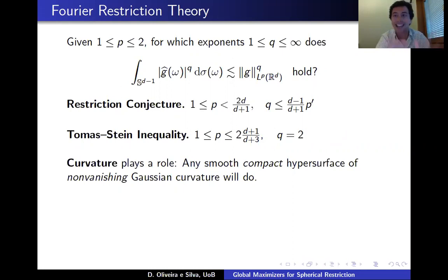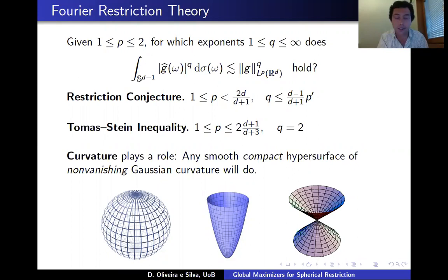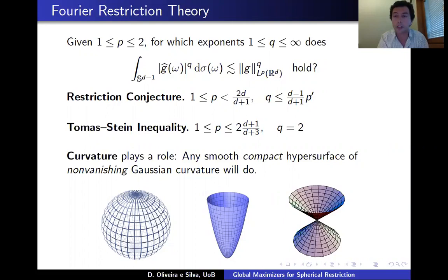The setting is somewhat artificial in that I chose the unit sphere, but one could equally consider an arbitrary smooth compact hypersurface of non-vanishing Gaussian curvature, or even relax these conditions. For instance, the paraboloid and the cone are scaling invariant, and one can extend restriction inequalities to the full paraboloid and full cone, corresponding to the well-known Strichartz inequalities for the Schrödinger and wave equations respectively.